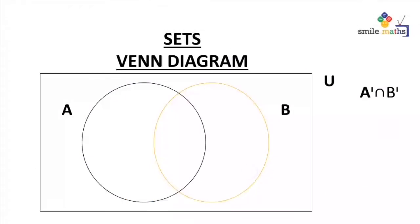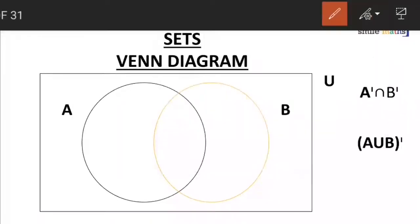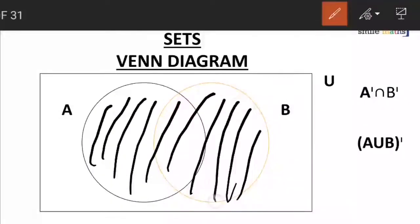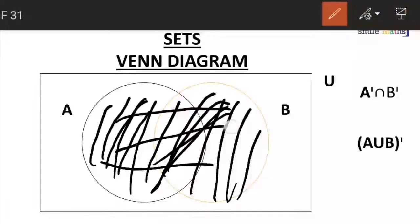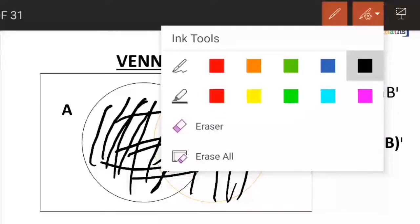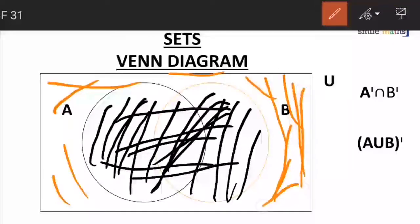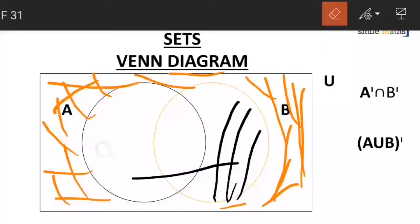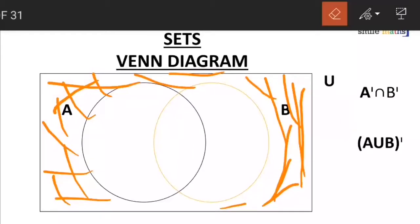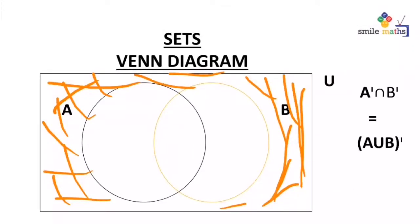Now let's move to our last example: A union B, complement. For A union B, using black, it's going to be elements found in A and B together. The complement of this is all sides outside this set — the orange marks. We can now clean the black marks, and we can see that the A union B is omitted. So we can conclude that A complement intersection B complement is also equal to the complement of A union B. And this is what we call De Morgan's law.